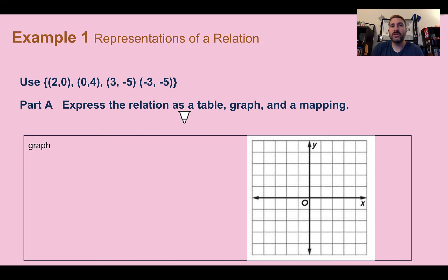For the graph, we just take each ordered pair and plot it. So (2, 0): 2 over, 0 up. (0, 4), (3, -5), and (-3, -5). I just plotted the coordinate where it should go. And that shows our relation as a graph.